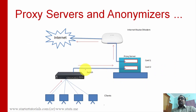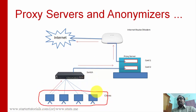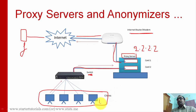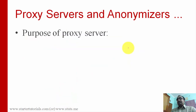A typical proxy setup in a company or office has multiple user systems connected to a switch, which connects to a proxy server, which connects to the internet router or modem, and finally to the internet. For example, if you are browsing Facebook from a system with IP 1.1.1.1, Facebook will only see the proxy server's IP address, such as 2.2.2.2. This provides a form of anonymous browsing for the organization.